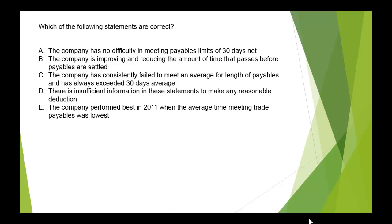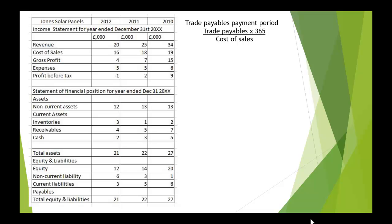Now referring to payables: does the company have any difficulty meeting payables limits of over 30 days? Is it improving and reducing the amount of time? Is it consistently failing to meet the average length? Is there insufficient information to make any reasonable deduction? And did it perform best in 2011 when the average time meeting trade payables was lowest? We calculate the trade payables payment period: trade payables multiplied by 365 divided by cost of sales. In 2012: 68 days. In 2011: 101 days. In 2010: 115 days.